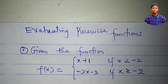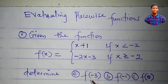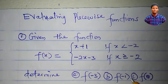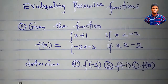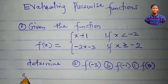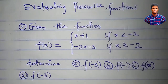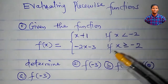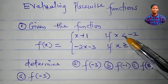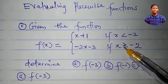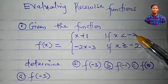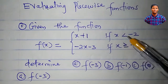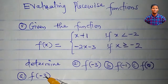How do I determine the values of f(minus 3), f(minus 1), and f(0)? Let's start with f(minus 3). I will look at the two intervals: x less than minus 2, and x greater than or equal to minus 2. In which of these intervals does minus 3 lie?